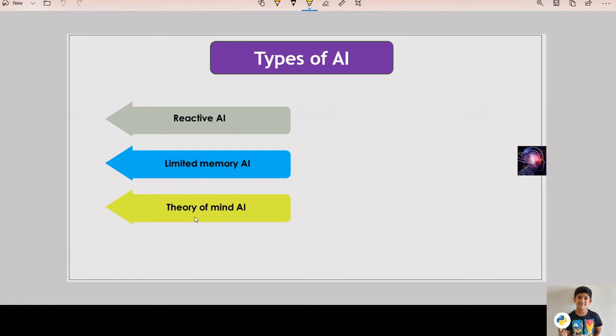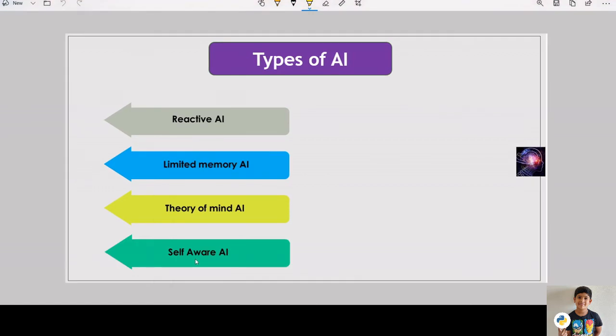It would be able to read people's emotions and adjust the communications accordingly. The next type is self-aware AI. These machines will be super intelligent and will have their own consciousness, sentiments and self-awareness. The world of robotics is rapidly changing by implementing simple and self-awareness protocols as part of robot functionality. This allows robots to learn more easily and needs less programming.